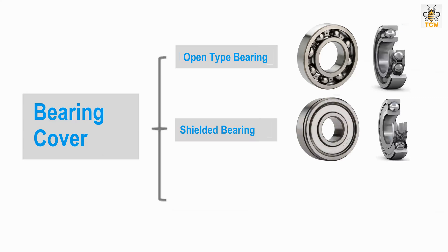Shielded-type bearings have a metal cover to protect the rolling elements, where the cover is made of metal that contacts the outer ring but does not make contact with the inner ring. This type of cover still allows lubricant to enter the bearing but contaminants can still be filtered out. This type of cover is used on machines with bearing lubricant that still contains contaminants.